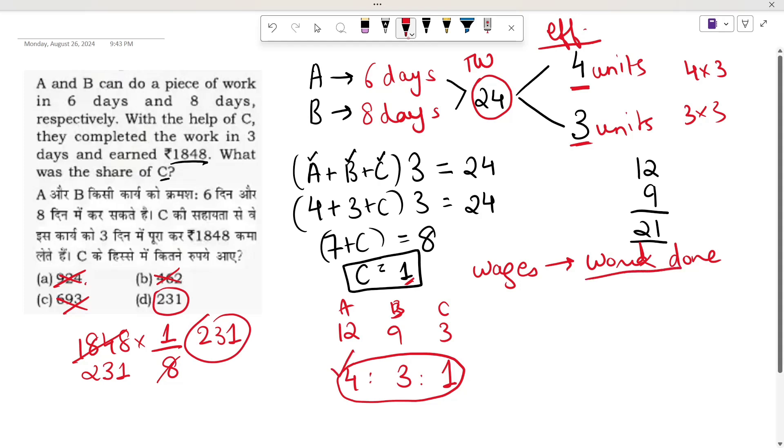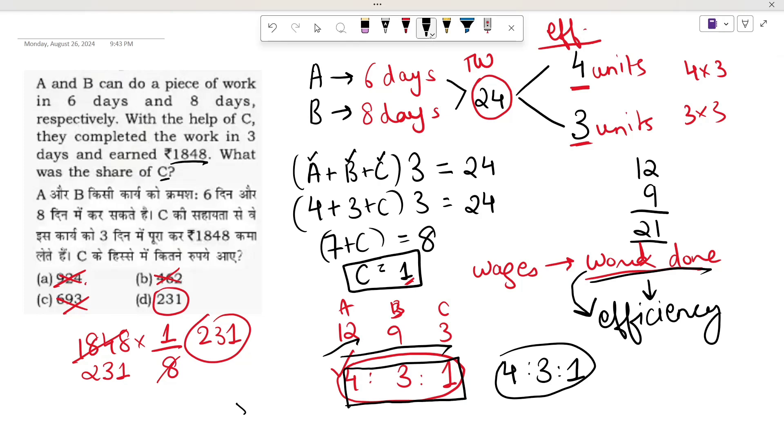One thing I have to explain more: the 4:3:1 ratio. We have to take the ratio of work done, which equals the efficiency times the number of days. The work done was 12, 9, and 3. When we cancel to lowest form, it's 4:3:1. If we take A's efficiency 4, B's efficiency 3, and C's efficiency 1, wages are distributed according to work done. If you like the video, please like and subscribe to the channel.